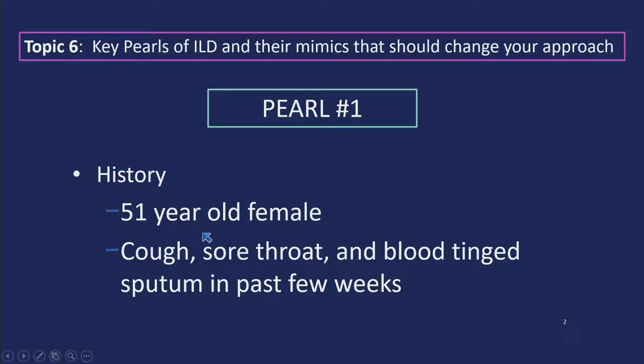Pearl one. History: 51-year-old woman with cough, sore throat, and blood-tinged sputum over the past few weeks. Her tempo is subacute — a few weeks, not one day, not one week, not three months.